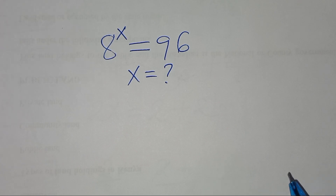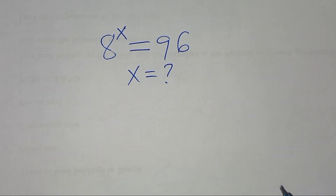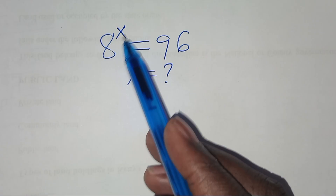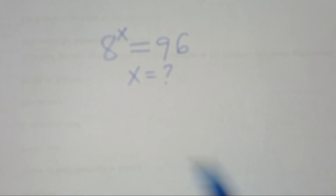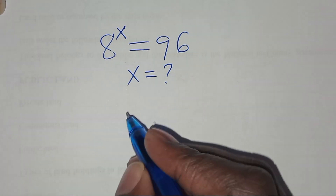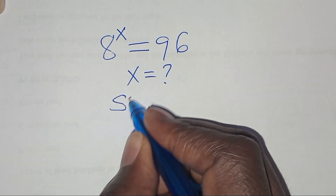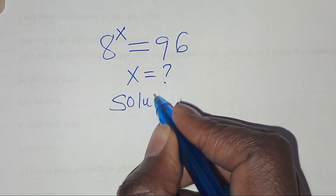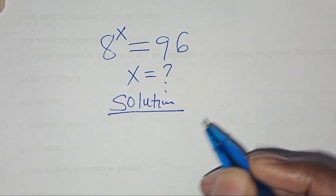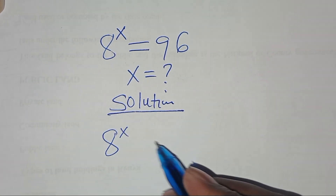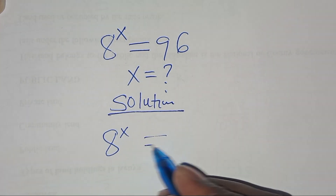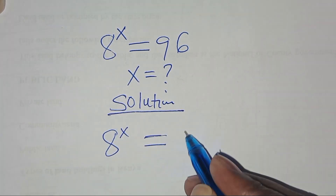Hello everyone, you're welcome to solve this nice exponential equation, which is 8 to the power x equals 96. What is the value of x? Solution: we have 8 to the power x equals 96.